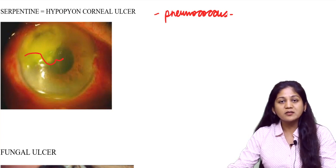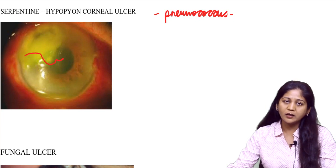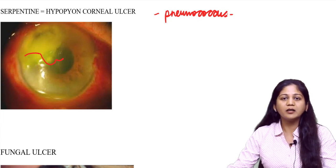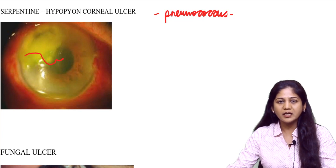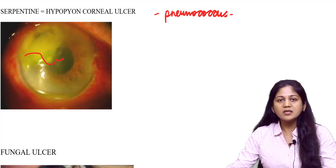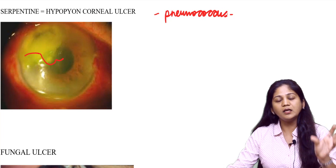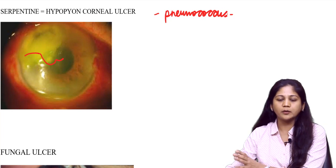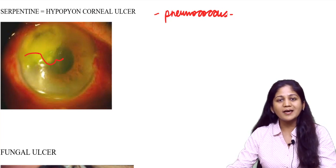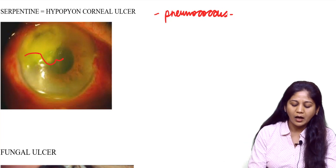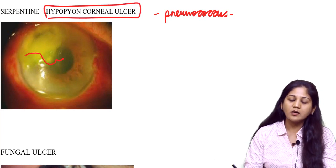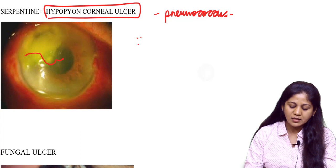This has been given a special name: hypopion corneal ulcer. Most ulcers, when affected by fulminant organisms, can cause hypopion and are called corneal ulcer with hypopion. But this ulcer has been given the special name hypopion corneal ulcer because it has a high chance of perforation.